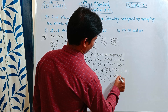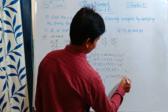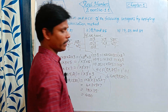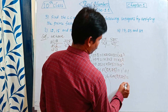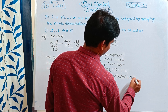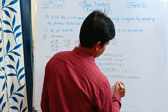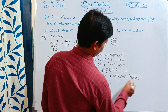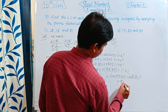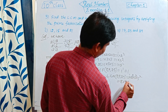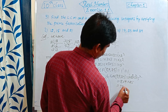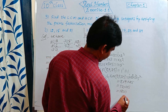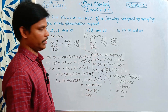LCM of 8, 9, 25 is equal to the greatest powers of all prime factors. Prime factors are 2, 3, 5. So the greatest powers are 1, 2³, 3², 5². Here 2³ = 8, 3² = 9, 5² = 25. So 8 × 9 × 25 = 72 × 25 = 1800. That is the LCM of the 3 numbers.